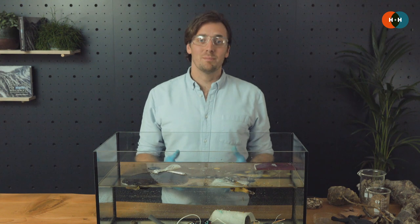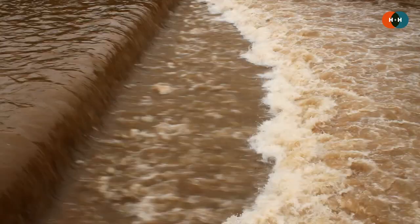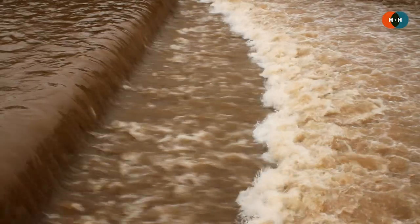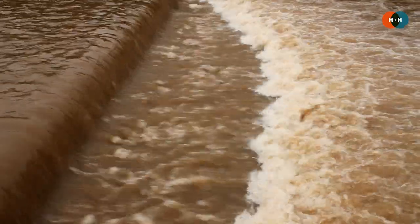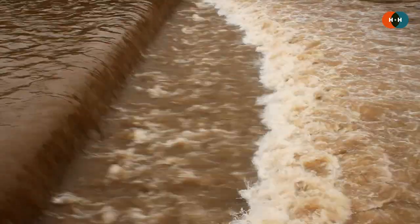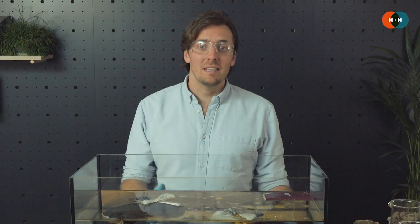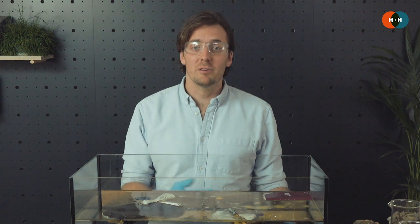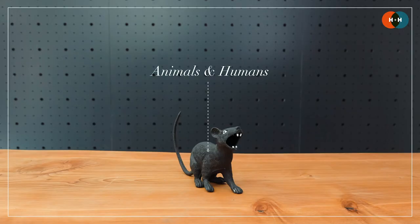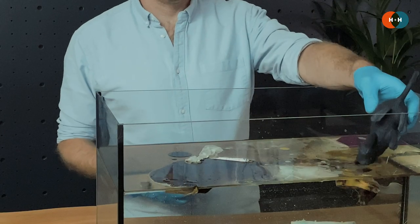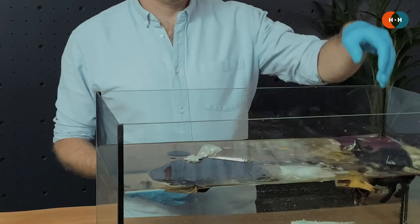Floodwater obviously poses a huge hazard to people — it only takes a very shallow depth of water moving at high velocity to knock you off your feet. But it can also be that animals are caught up and drowned in floodwater or die from exposure to these different contaminants. So we've got Rob the Rat here, which we're going to pop in as a symbol to represent the hazard that floodwater poses to both human and animal life.